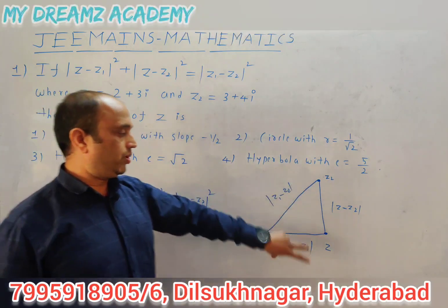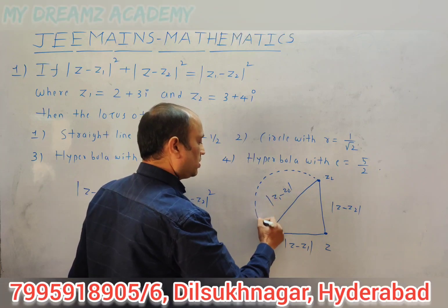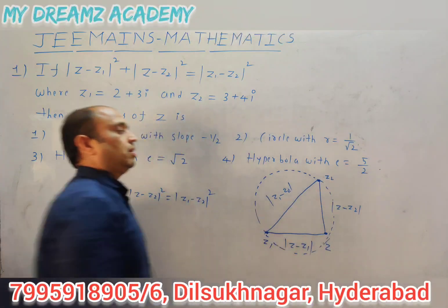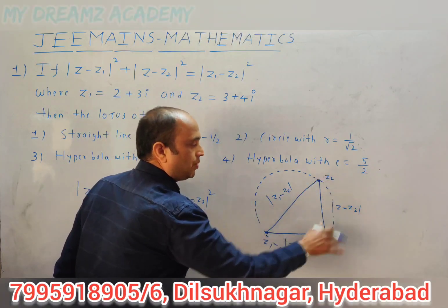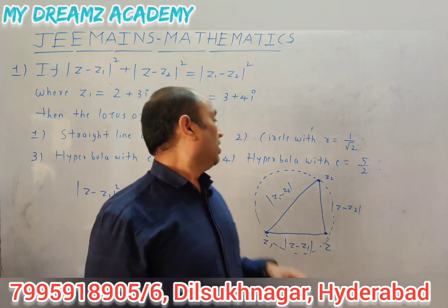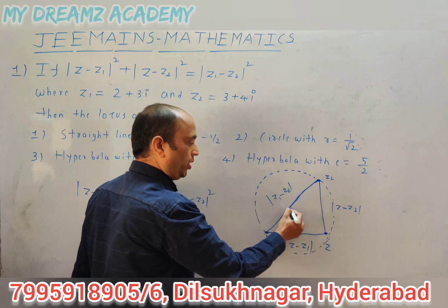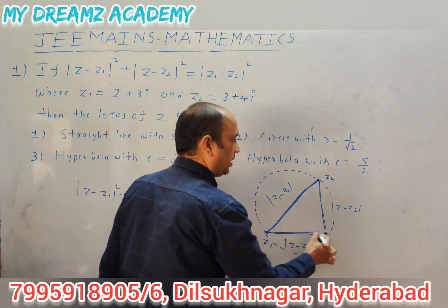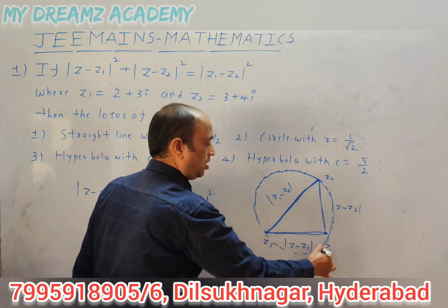We know that AC² = AB² + BC². If this represents a circumcircle, then z1, z, z2 lie on a semicircle. The angle in a semicircle is always a right angle. If it is a right angle triangle, then z1 z2 is the hypotenuse, because z, z1, z2 form a right-angle triangle in the circumcircle.